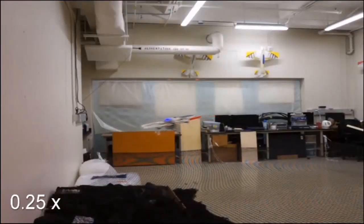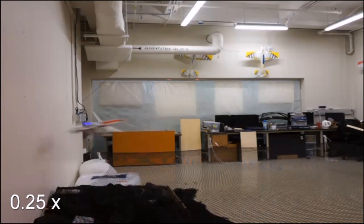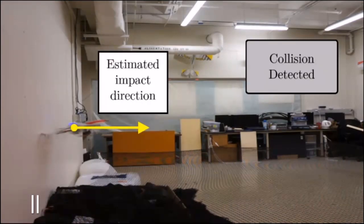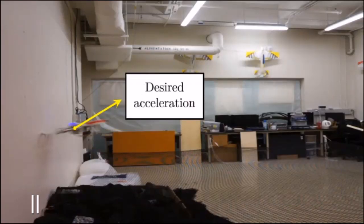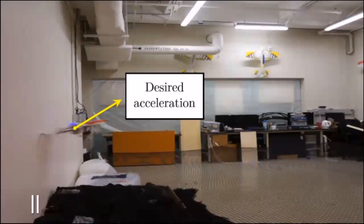The quadrotor first detects the collision using an accelerometer and estimates the direction of the impact. Fuzzy logic is then used to quickly characterize the intensity of the collision. This intensity value is used to generate a desired acceleration pointing away from the wall.